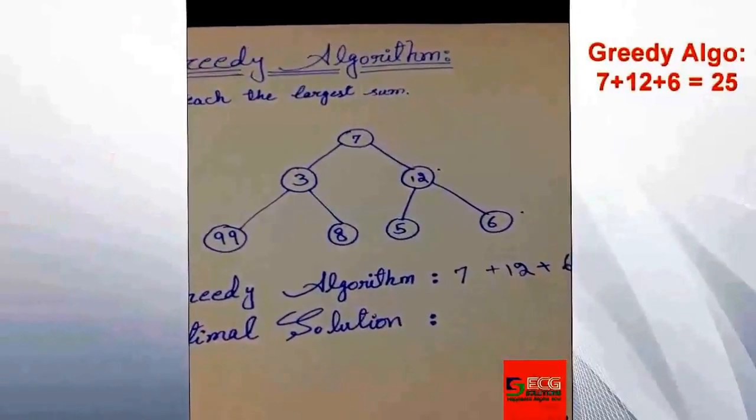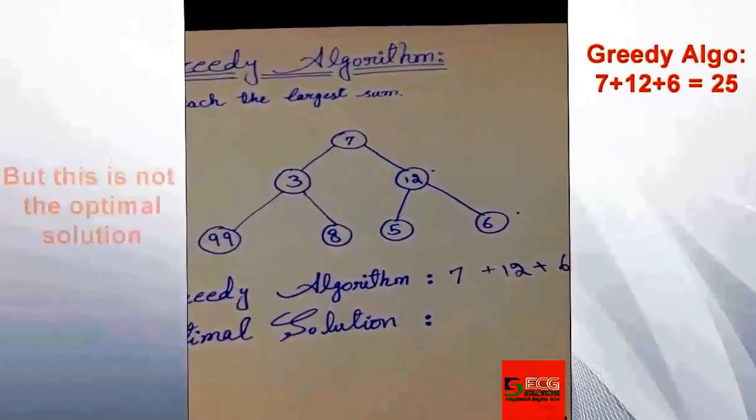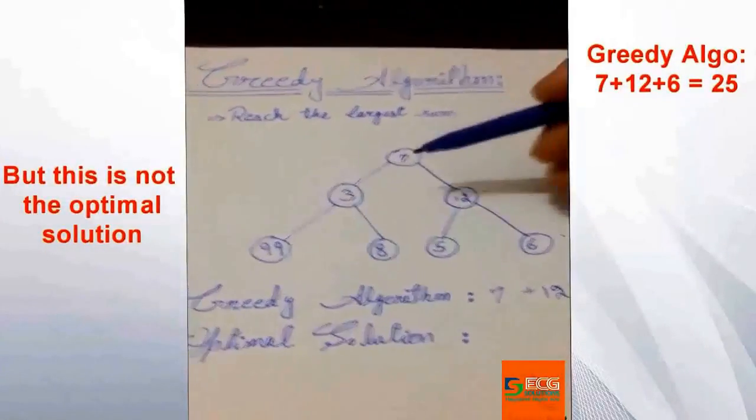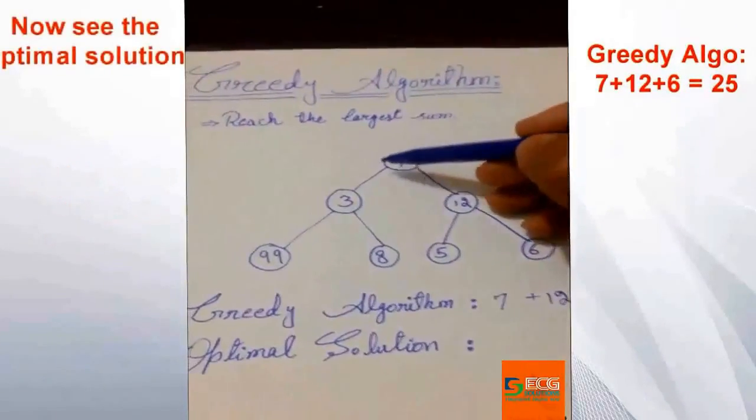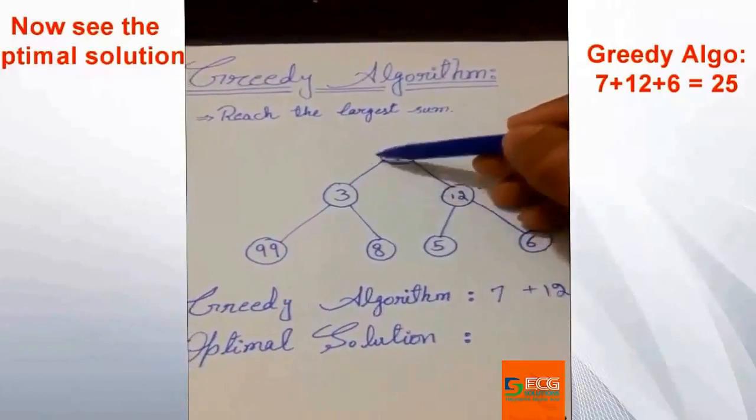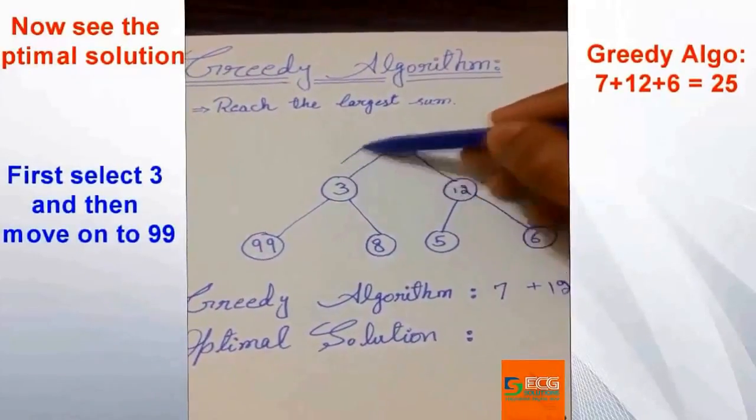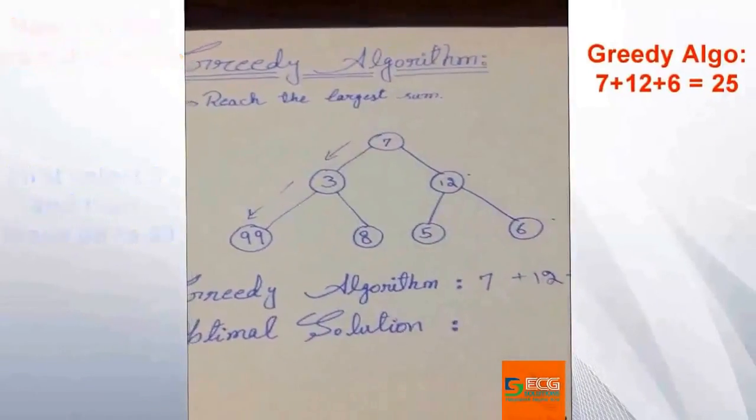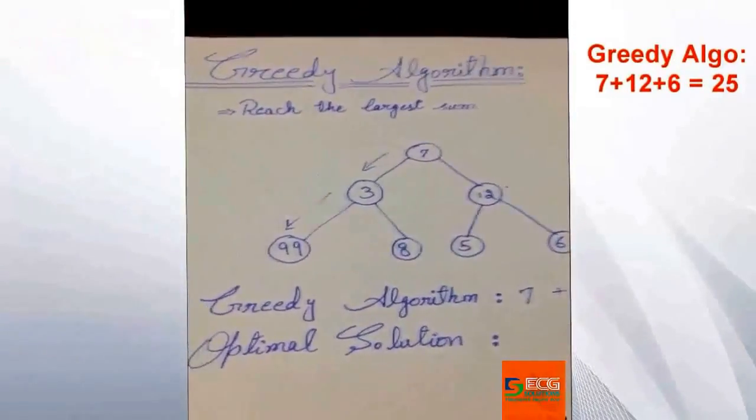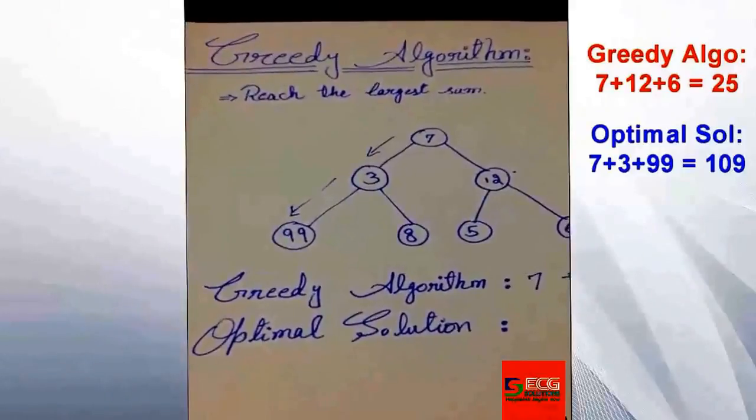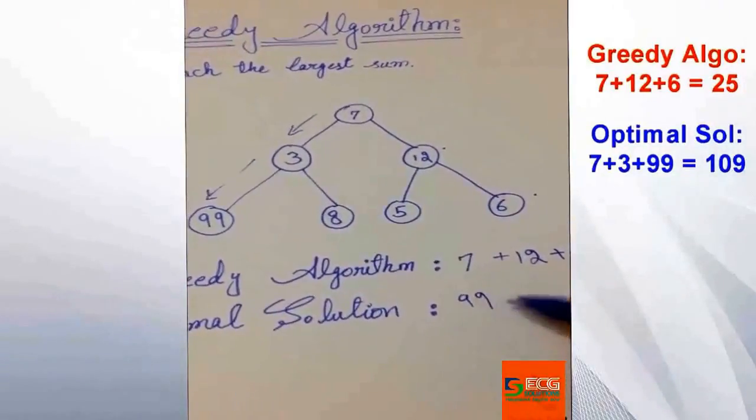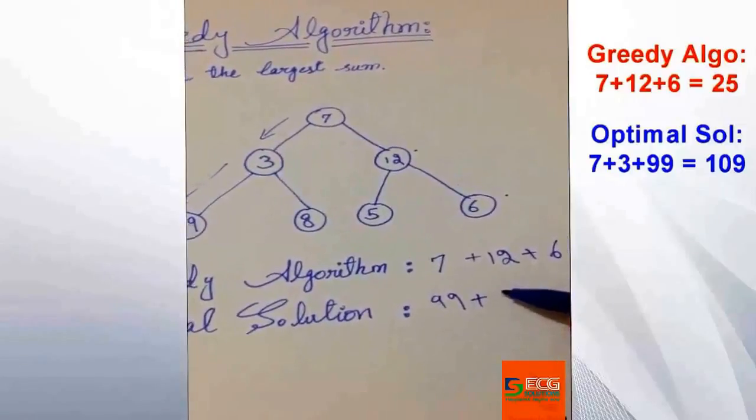But it is not true in this case. As I have already mentioned, greedy search algorithm will not always find the optimal solution as global. The global optimal solution was if we move from 7 to 3 and 3 to 99. We can write that 7 plus 3 plus 99, so this could be our optimal solution as global.